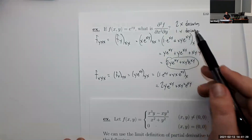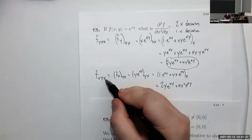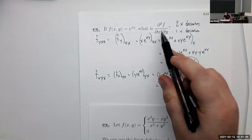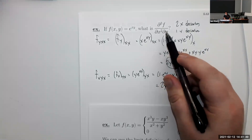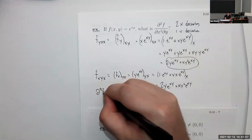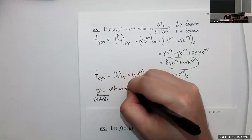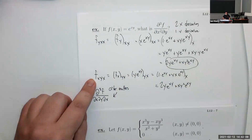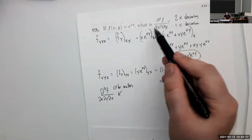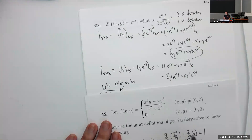The moral of the story: this notation tells you how many x-derivatives and how many y-derivatives to do. If order mattered for a specific problem, it would be written as ∂/∂x·∂/∂y·∂/∂x to indicate the middle derivative is with respect to y. But most of the time, order won't matter. If it looks like a rational piecewise function, be a little careful. If it's something nice like a polynomial or sine or cosine — normally continuous and not piecewise — just do it in any order.